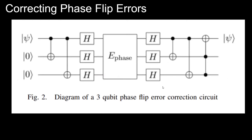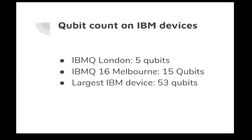For phase flip error correction, the same circuit structure is used with the addition of Hadamard gates to the logical qubit and two ancillary qubits. This is the three-qubit phase flip error correction circuit. Three Hadamard gates are applied when the error block is not present, followed by CNOT gates across the Hadamard gates, and then Hadamard gates again. Measurement is of prime importance — without measurement we cannot control or observe the circuit's performance.